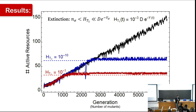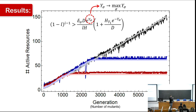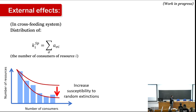Another interesting result: when you look at the sufficient condition for invasion, it depends on the species trying to invade. If you replace the species-specific fitness with the maximum fitness in the population, it fits all the curves — so the highest-fitness strain is the one driving all invasions in the system.